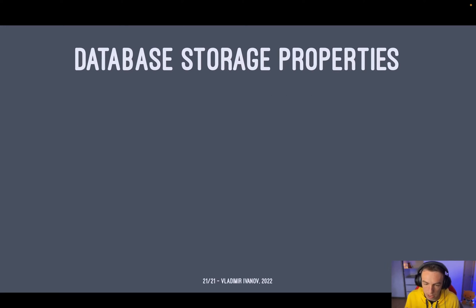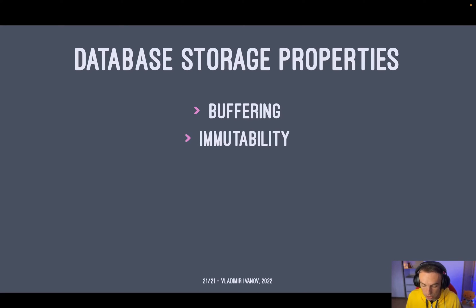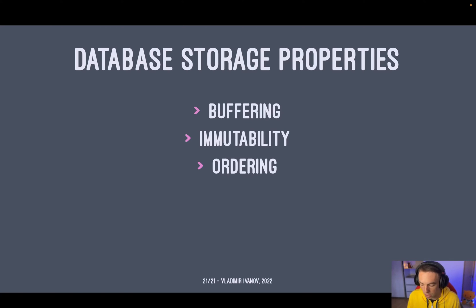The last thing this chapter covers is database storage properties. Some databases use buffering for reading and writing data from disk, while others don't. Some use immutable data structures — for example, Kafka is append-only storage. Others allow mutation of stored data. There is also ordering — whether the database stores data in a particular order or just uses write order. These properties are important for understanding how databases work and will be covered further in upcoming videos.